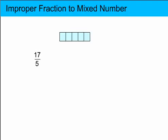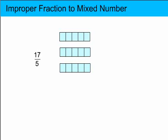So here's a whole part and it's divided into 5, so that's 5 fifths. And another whole part would give us 10 fifths. And another whole part would give us 15 fifths. And we need 17 altogether, so we need 2 more.